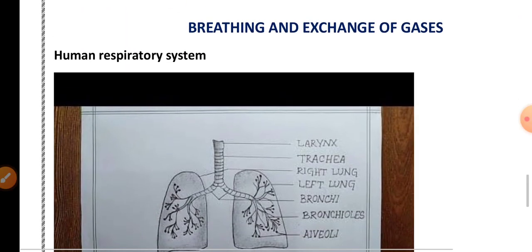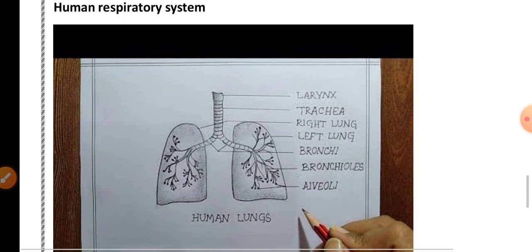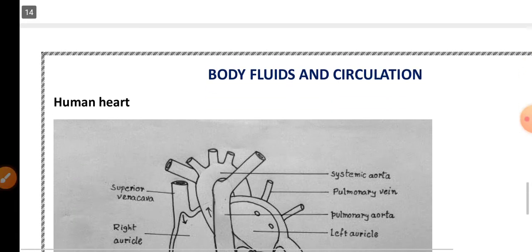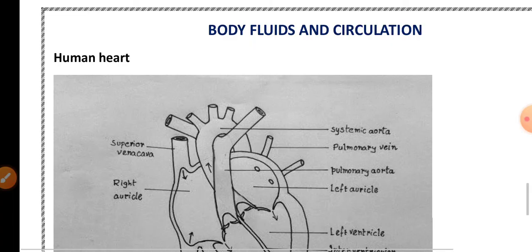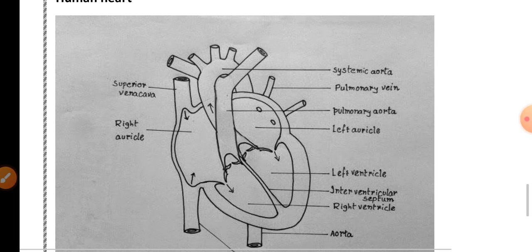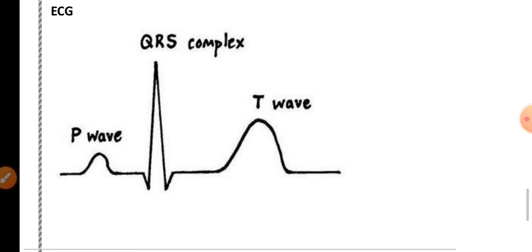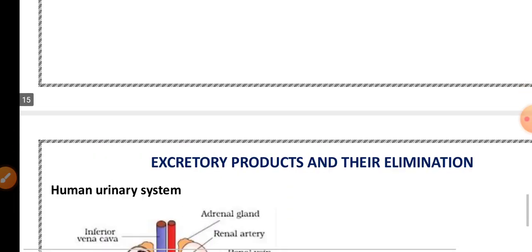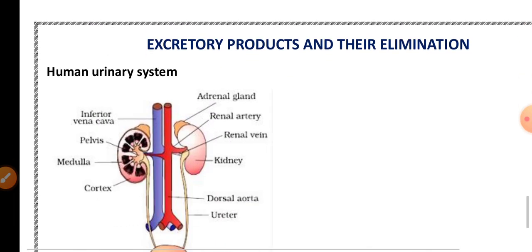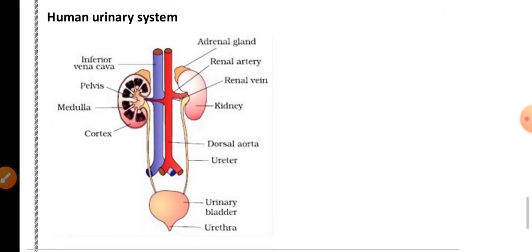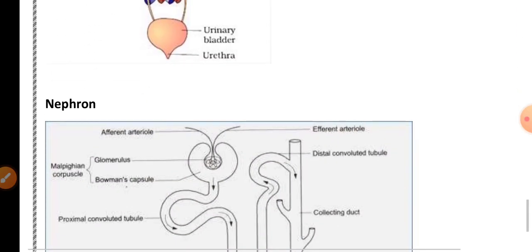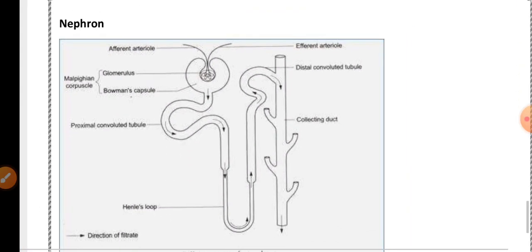From Breathing and Exchange of Gases, the human respiratory system diagram is very important. From Body Fluids and Circulation, the human heart diagram is important for five marks, and they may ask you to represent the ECG graph for two marks. From Excretory Products and Their Elimination, they may ask you to draw the human urinary system for three marks or the nephron diagram for five marks — both are very important.